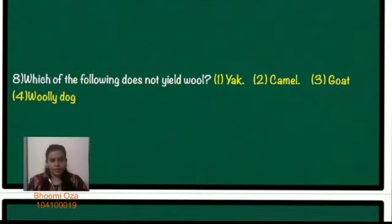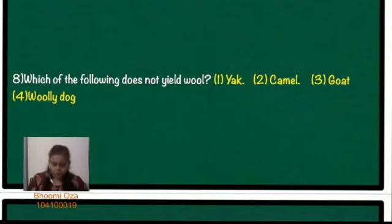The eighth question: which of the following does not yield wool? The options are yak, camel, goat, and woolly dog. Out of these, the animal which does not yield wool is the woolly dog.